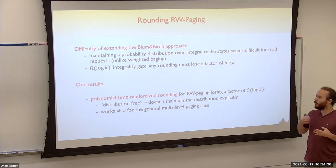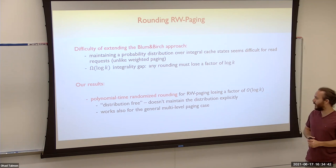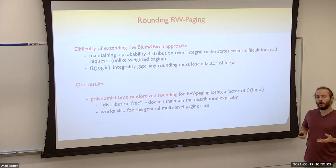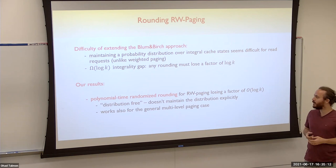Instead, we take a different approach: we give a polynomial-time randomized rounding for RW paging that loses a factor of log k. This rounding method is distribution-free — all it needs is the current cache state, which is random, and the fractional solution and its change, making it poly-time unlike distribution maintenance over time. We also show it works for general multi-level paging and for weighted paging.